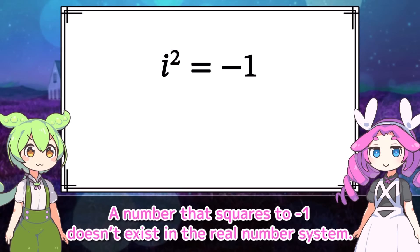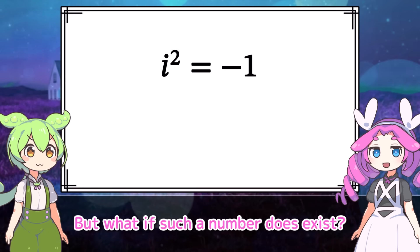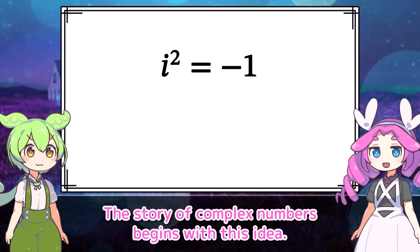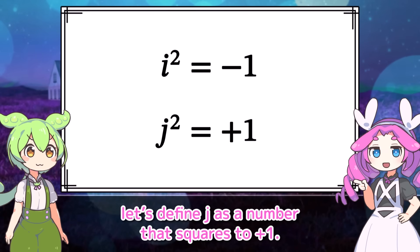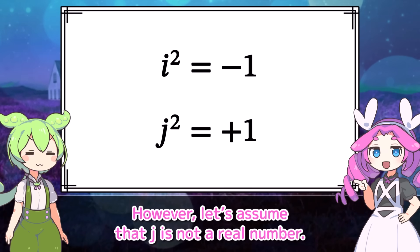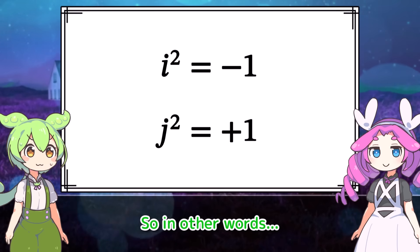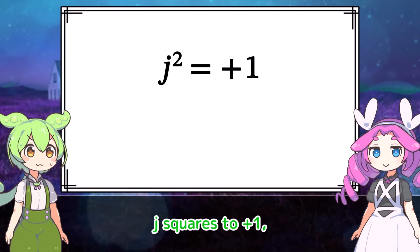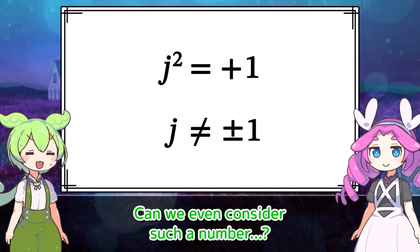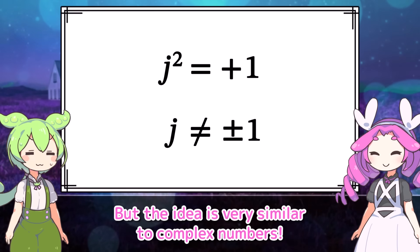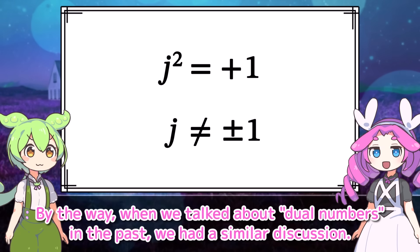A number that squares to negative 1 doesn't exist in a real number system. But what if such a number does exist? The story of complex numbers begins with this idea. Similarly, let's define j as a number that squares to positive 1. However, let's assume that j is not a real number. So in other words, j squares to positive 1, but it's not plus or minus 1? When we talked about dual numbers in the past, we had a similar discussion.